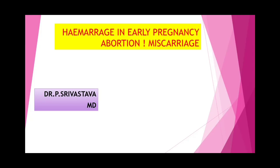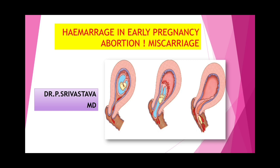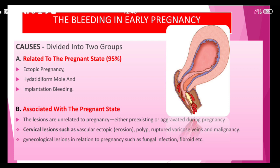Hello, I am Raj. In early pregnancy we will see about abortion and miscarriage. The causes of bleeding in early pregnancy are divided into two groups: those related to the pregnant state — which may be ectopic pregnancy, hydatiform mole, and implantation bleeding — and those associated with the pregnant state due to cervical lesions such as vascular ectopic erosion, polyp, ruptured varicose vein, and malignancy.